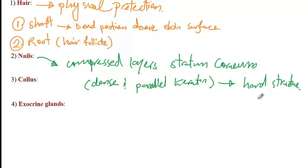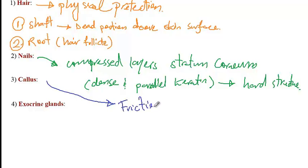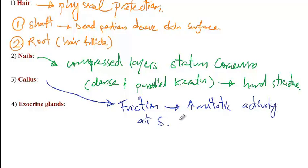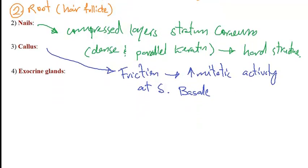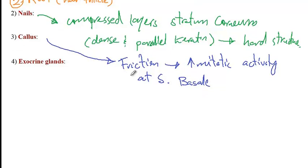The next structure is the callus. Over areas of skin with too much friction, there would be increased mitotic activity at the stratum basale layer. Friction induces this increased mitotic activity in order to form an extra layer of physical protection.